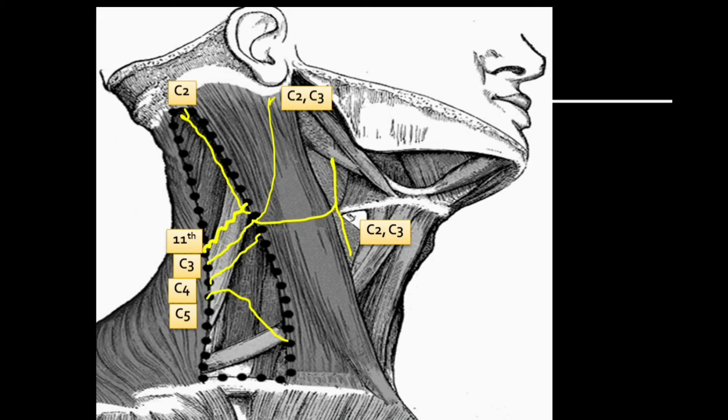Another cutaneous nerve we can see here is the supraclavicular nerve, C3-C4, having three branches: medial, intermediate, and lateral. The intermediate branch will pierce the clavicle muscle, which is why the clavicle is known as the dermal bone.